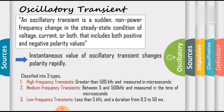Oscillatory transients are classified into three types: high frequency, medium frequency, and low frequency transients, divided according to their frequency levels. High frequency transients have frequency components greater than 500 kilohertz and a typical duration measured in microseconds — in the tens of microseconds. Low frequency transients have frequency components less than 5 kilohertz and a duration from 0.3 to 50 milliseconds.